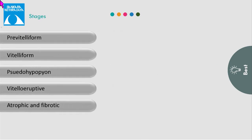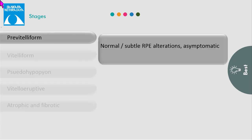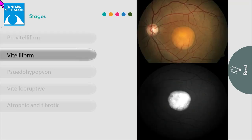In the pre-vitelliform stage, the patient is generally asymptomatic with normal fundus or subtle RPE alterations. In the vitelliform stage, the patient presents with mild visual impairment. On fundus examination, there is a well-circumscribed yellowish elevated lesion resembling an egg yolk.